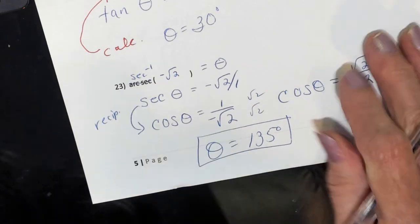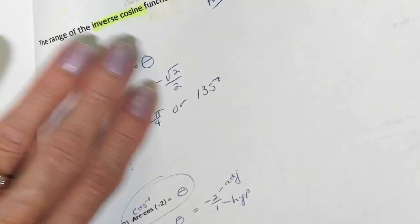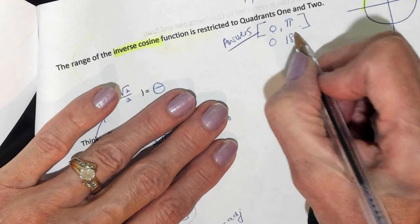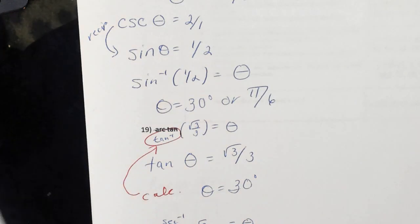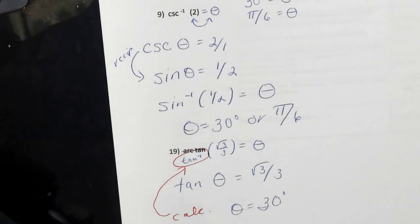Is 135 degrees acceptable for cosine? Our answers have to be between 0 and pi, which is 0 and 180. And 135 is between 0 and 180 — so yes, we're okay. Ladies and gentlemen, just follow these steps and make sure you do all of them, and you'll be just fine. Bye-bye.